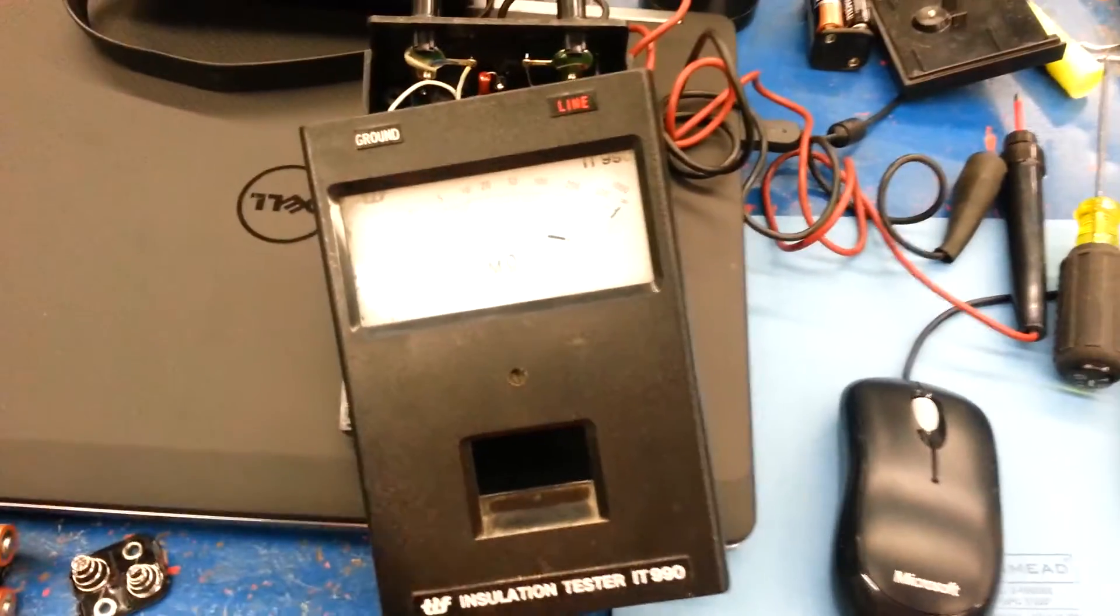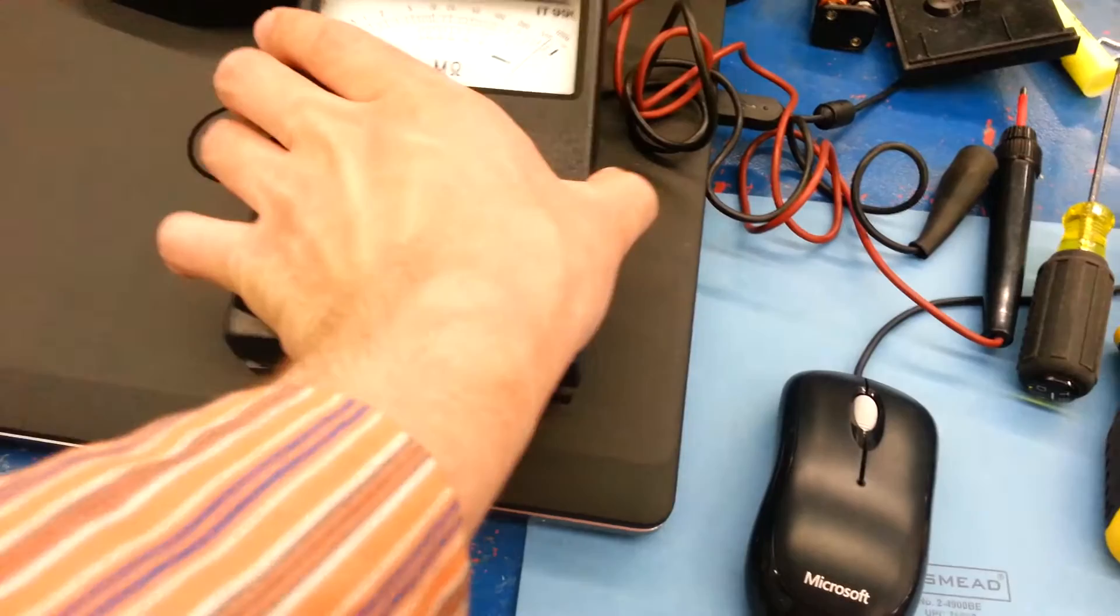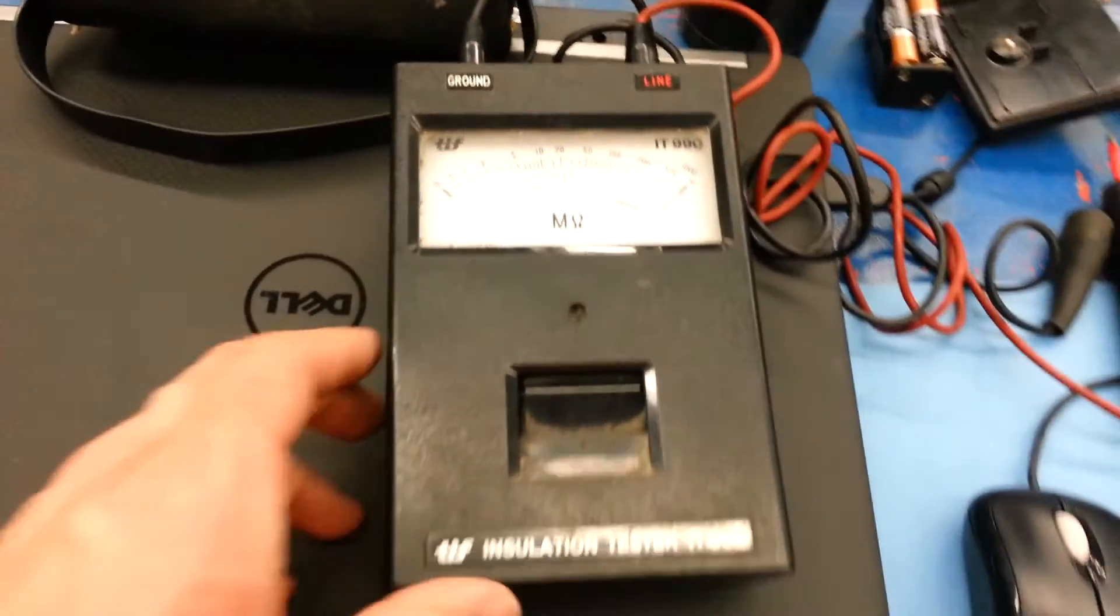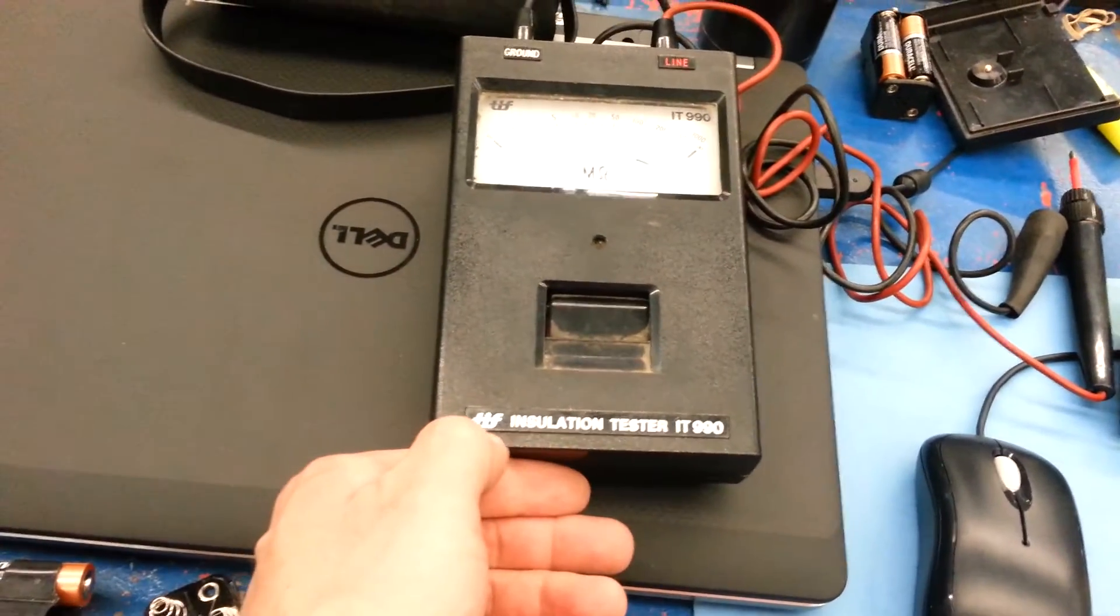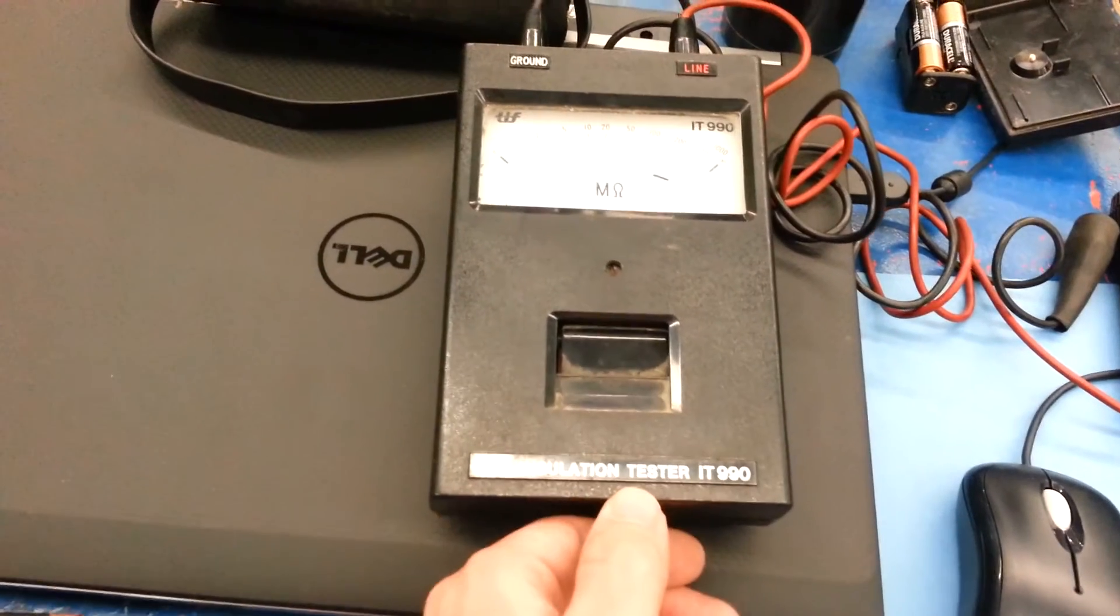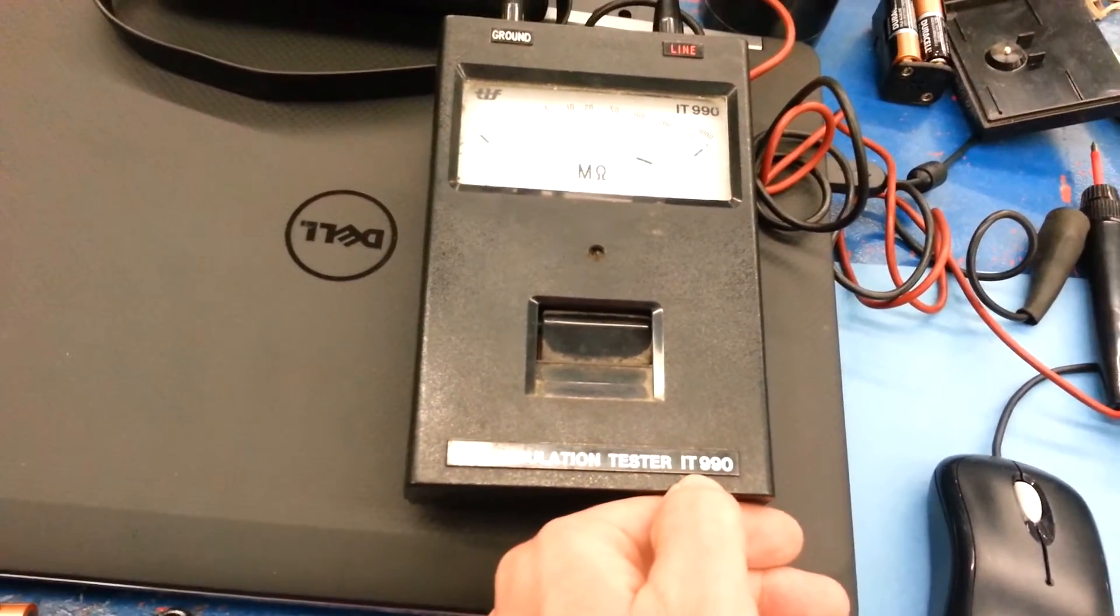CassetteMaster presents a very special measuring device. This is the TIF Installation Tester, model IT-990.